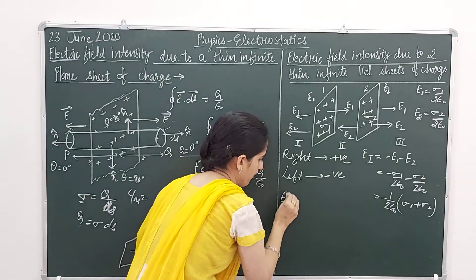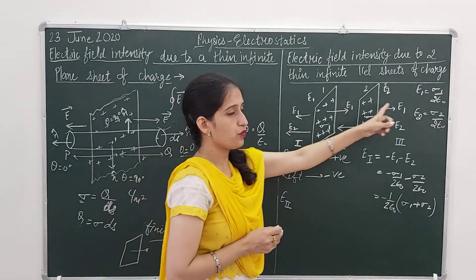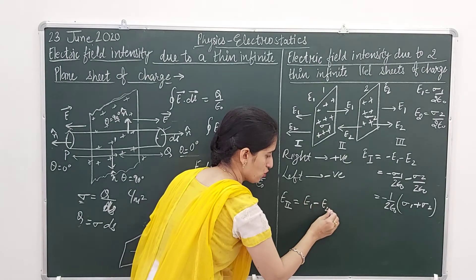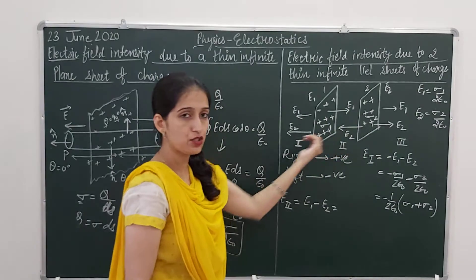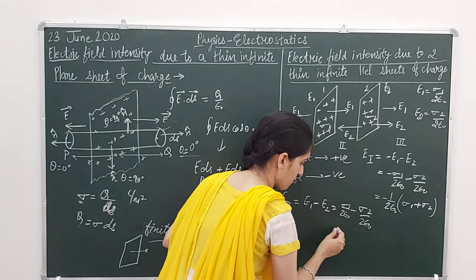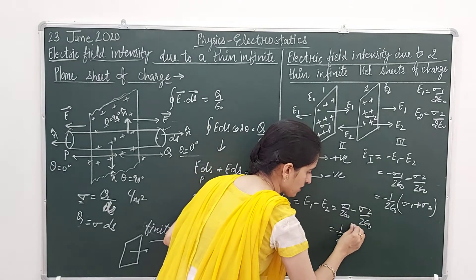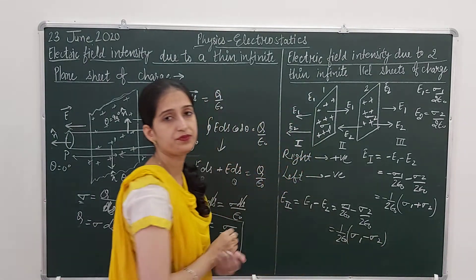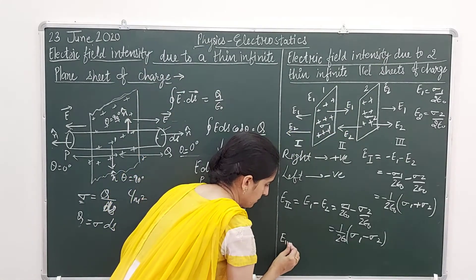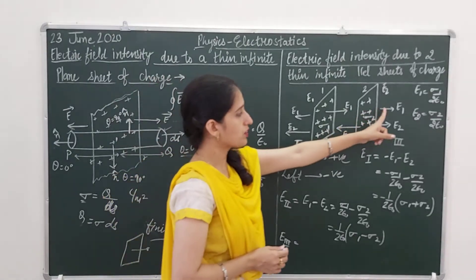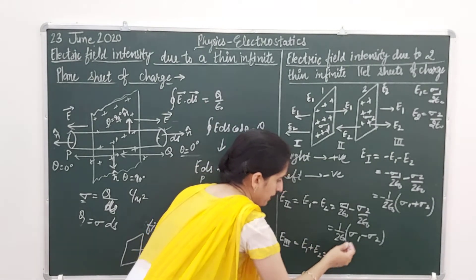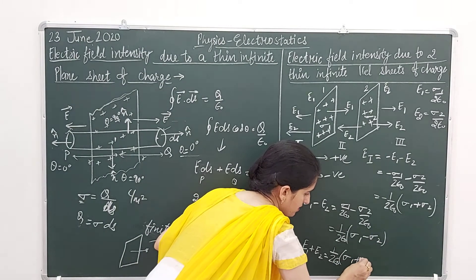In Region 2, E1 is towards the right-hand side and E2 is towards the left-hand side, so: E_Region2 = E1 − E2 = σ₁/2ε₀ − σ₂/2ε₀ = (1/2ε₀)(σ₁ − σ₂). For Region 3, both E1 and E2 are towards the right-hand side, so we take them positive: E_Region3 = E1 + E2 = (1/2ε₀)(σ₁ + σ₂).